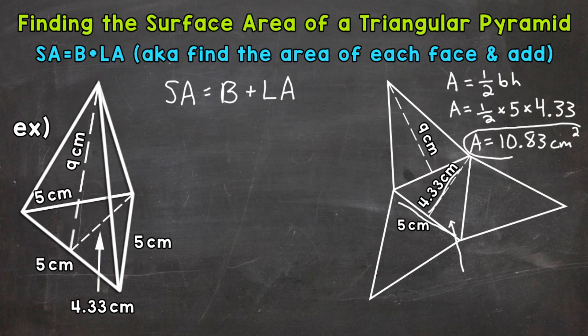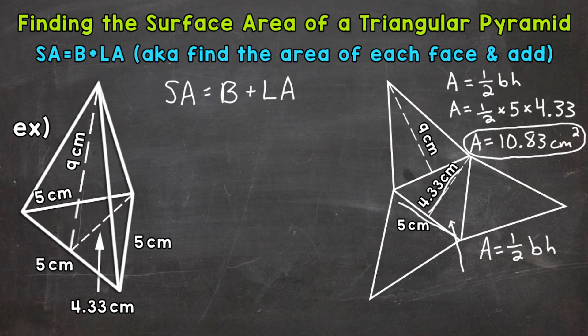Once we have the area of the base, we need to find the lateral area — the area of the triangular lateral faces. Since this is a regular pyramid, meaning the base's sides are all the same, all of the lateral faces will have the same exact area. So we just need to find the area of one and we will have them all. Area equals one-half times the base times the height — again, we're working with triangles, so we need that formula.